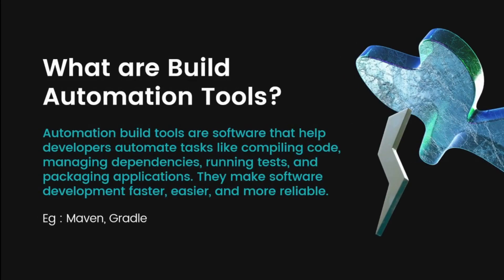Now, let us learn what are build automation tools. Build automation tools are software that help developers automate tasks like compiling the code, managing dependencies, running tests, and packaging applications. They make the software development process faster, easier, and more reliable. For example, as a software engineer, instead of manually writing, compiling, and running code, a build automation tool can do all of that automatically. Maven and Gradle are examples of build automation tools.